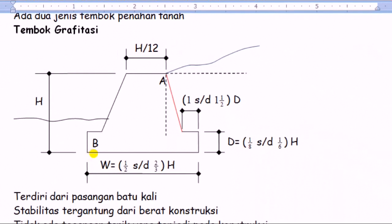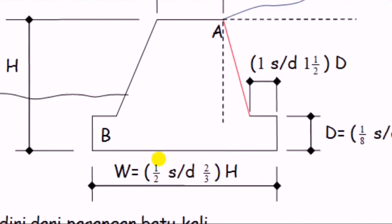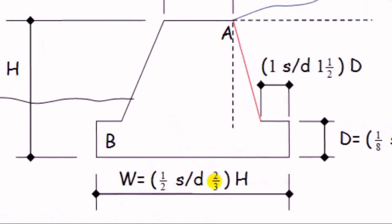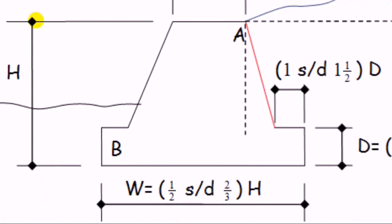Sedangkan bagian bawah ini lebarnya, lebar telapak tembok ini biasa kita sebut dengan W. Itu bisa kita ambil setengah sampai dengan dua per tiga dari tinggi tembok ini. Jadi tetapkan dahulu tinggi tembok berapa.